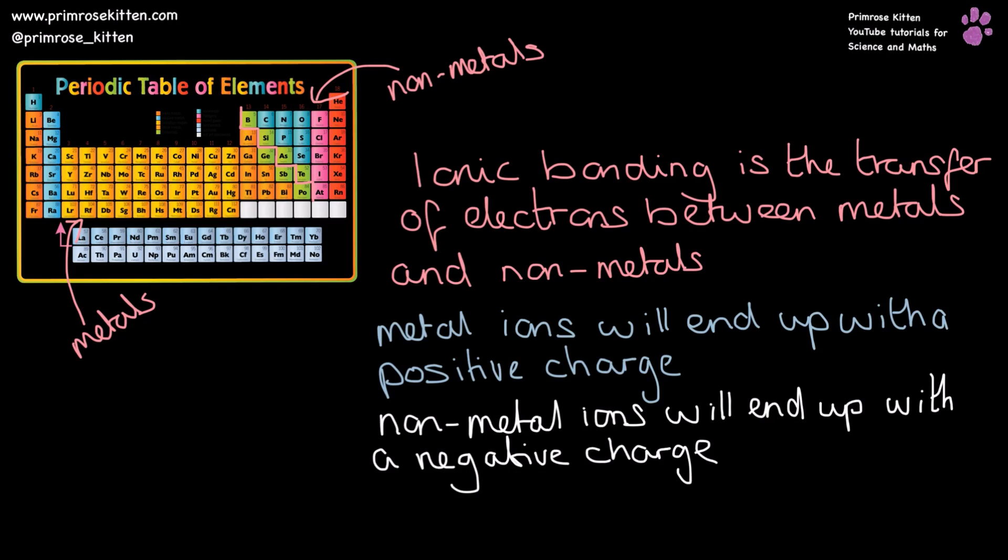In ionic bonding, we have the transfer of electrons from metals, which are on this side of the periodic table, to non-metals, which are on this side of the periodic table. The metal ions are going to end up with a positive charge. The non-metal ions are going to end up with a negative charge.